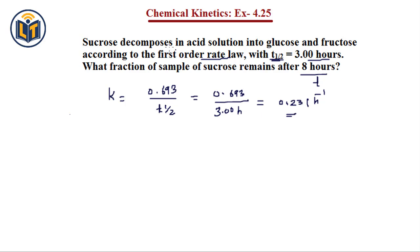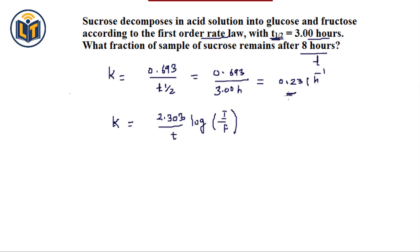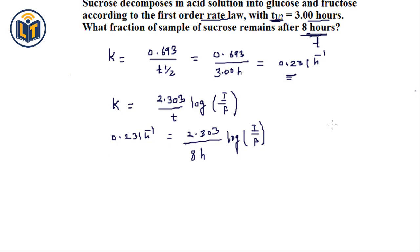Since the reaction is first order and time is given, we apply the first-order formula: K = (2.303 / t) × log(I / F), where I is the initial amount of sucrose and F is the remaining (final) amount. We plug in K = 0.231 per hour and time t = 8 hours, giving: 0.231 = (2.303 / 8) × log(I / F).